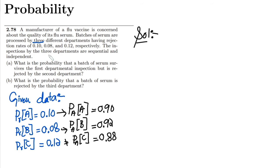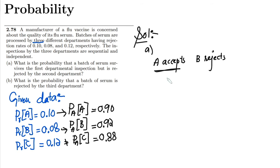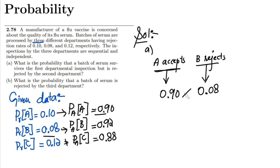The inspection by the three departments is sequential and independent. In part A, we need to find the probability that a batch of serum survives the first department inspection but is rejected by the second department. So I need the probability that A accepts the serum while B rejects it. The acceptance probability of A is 0.90 and the rejection probability of B is 0.08. Multiplying them gives 0.072, which is the solution to part A.